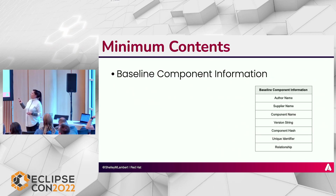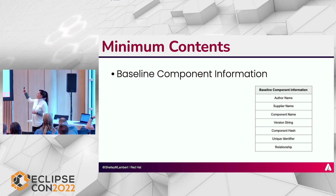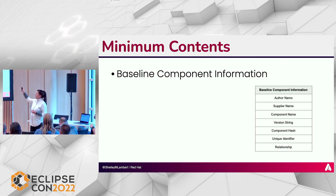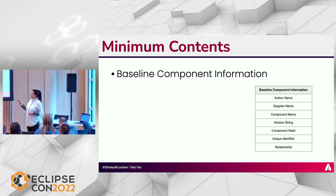In an SBOM — that bill of materials, that list of ingredients — there are some minimum contents we should include. For example, where we're getting our compound parts, those suppliers — we want to make sure all the information is there: the unique identifier, the SHAs if we're pulling from GitHub repos, and that kind of thing.